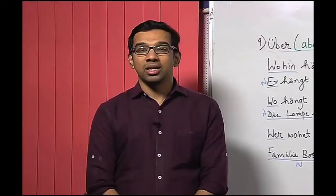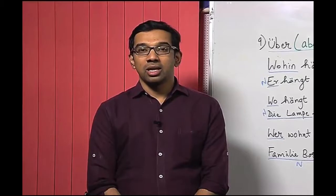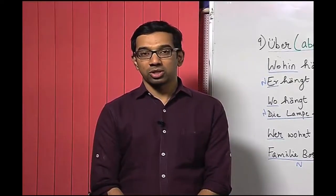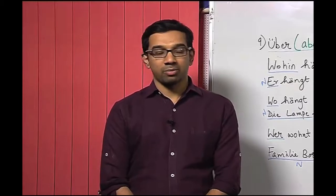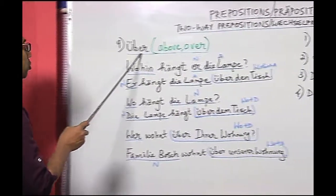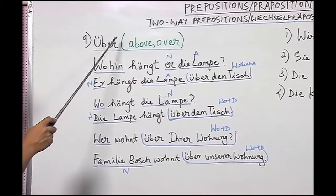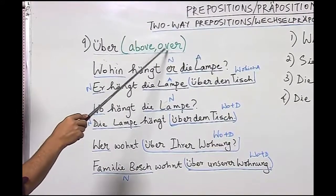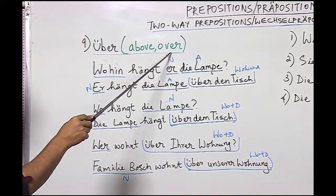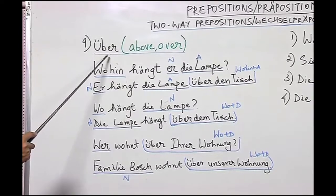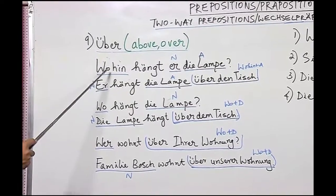Now let us see the last preposition in the list of Wechselpräpositionen: the preposition 'über'. 'Über' roughly means either 'above' or 'over' in English. Let us look at some examples with the preposition 'über'.